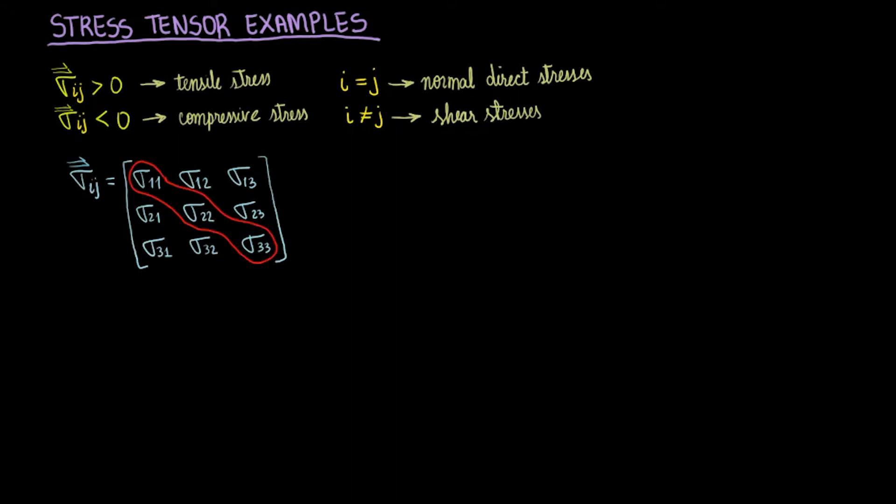Second, also note that when i equals j, such as in sigma 1-1, 2-2, or 3-3, we are dealing with a normal or direct stress that goes on the diagonal. When the stress component has different indices, that is i does not equal j, such as in sigma 1-2, we are dealing with shear stresses that go on the off diagonal.